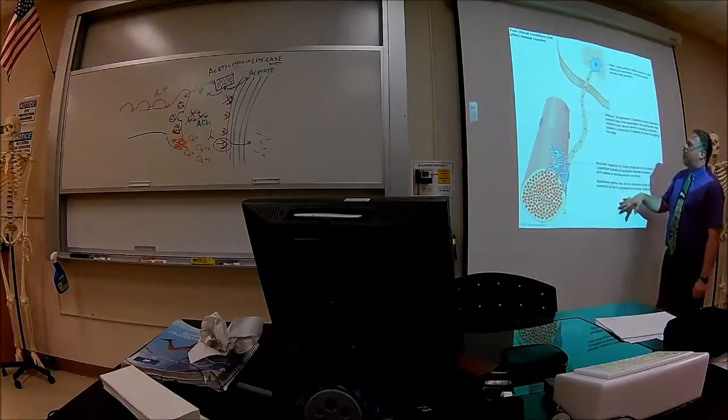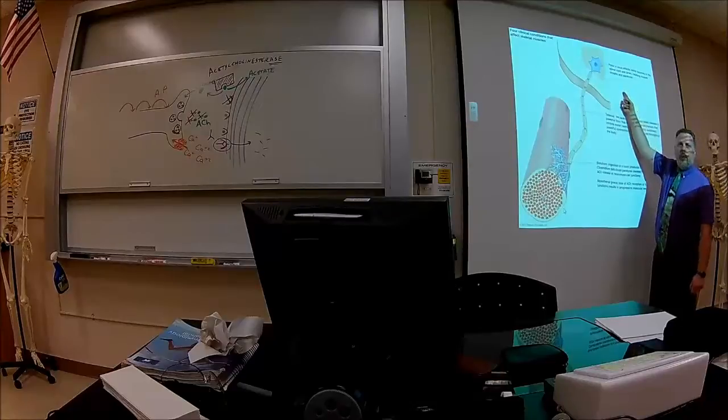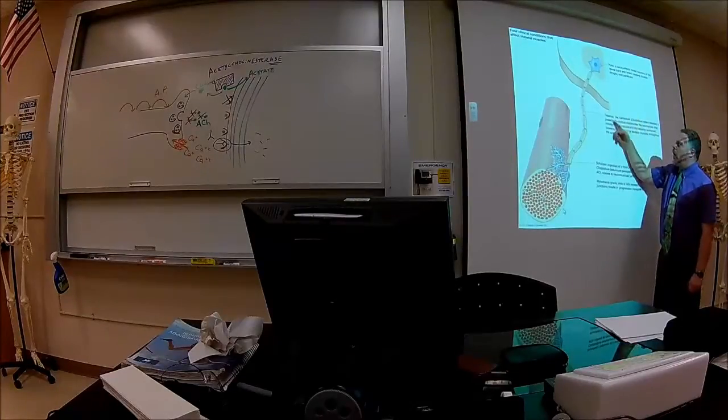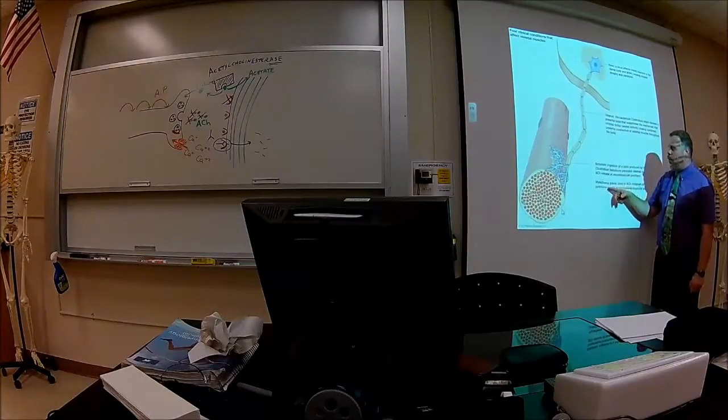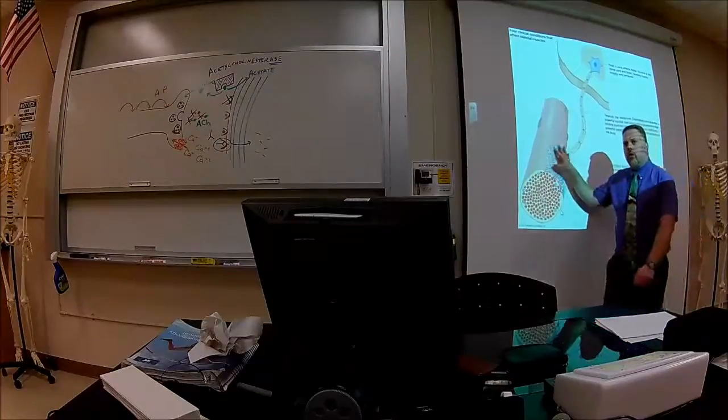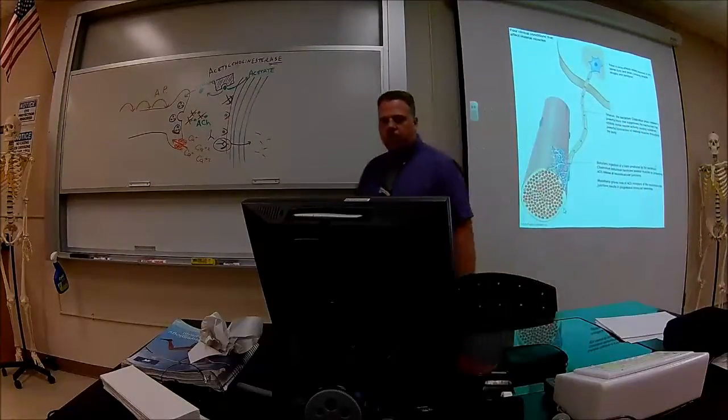This is just kind of showing you in different places. Polio is much higher upstream. We'll talk about that later. Tetanus is over here. Botulism, myasthenia gravis, rabies affects the neuromuscular junction at that level over here.